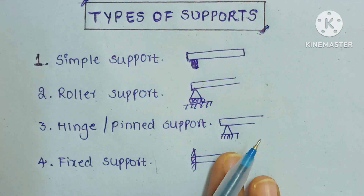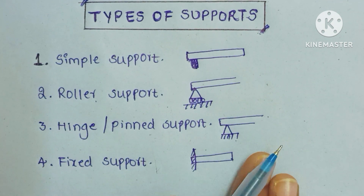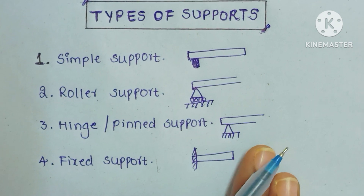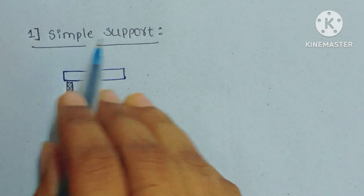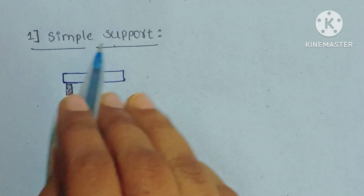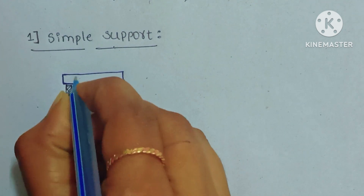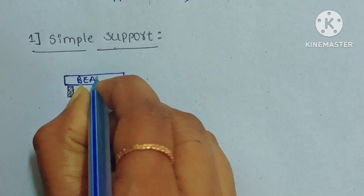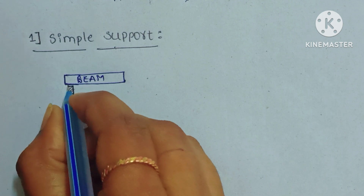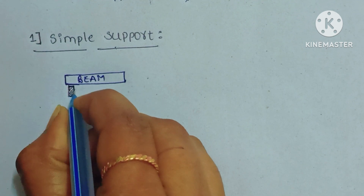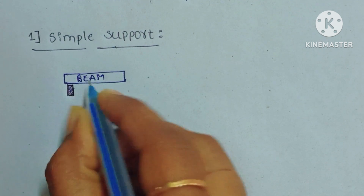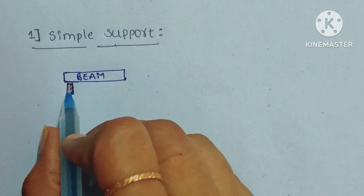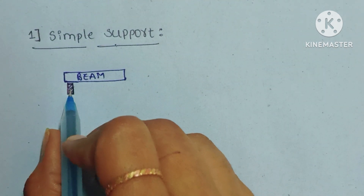If you remember these four types of supports, you can easily solve the problems. Now, looking at simple support: this is the beam, supported with one member — this is nothing but simple support. To find the forces acting on this beam, we need to convert this into a free body diagram.